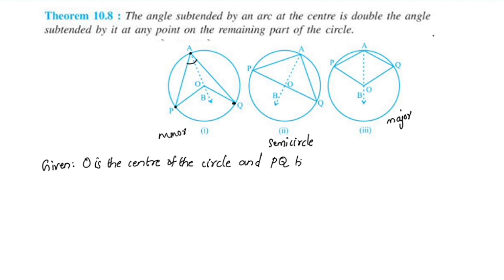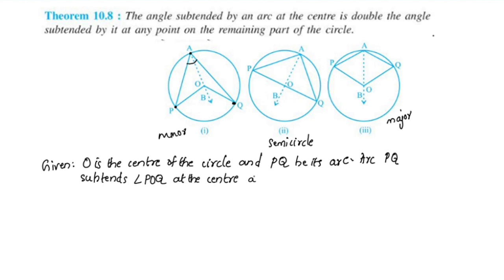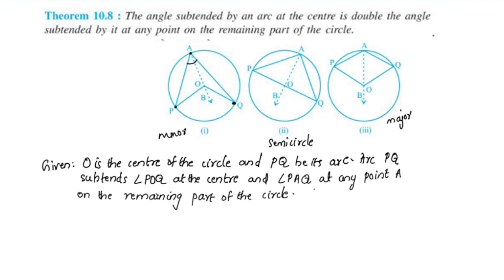Let arc PQ subtend angle POQ at the center, and angle PAQ at any point A on the remaining part of the circle. We get 3 cases.